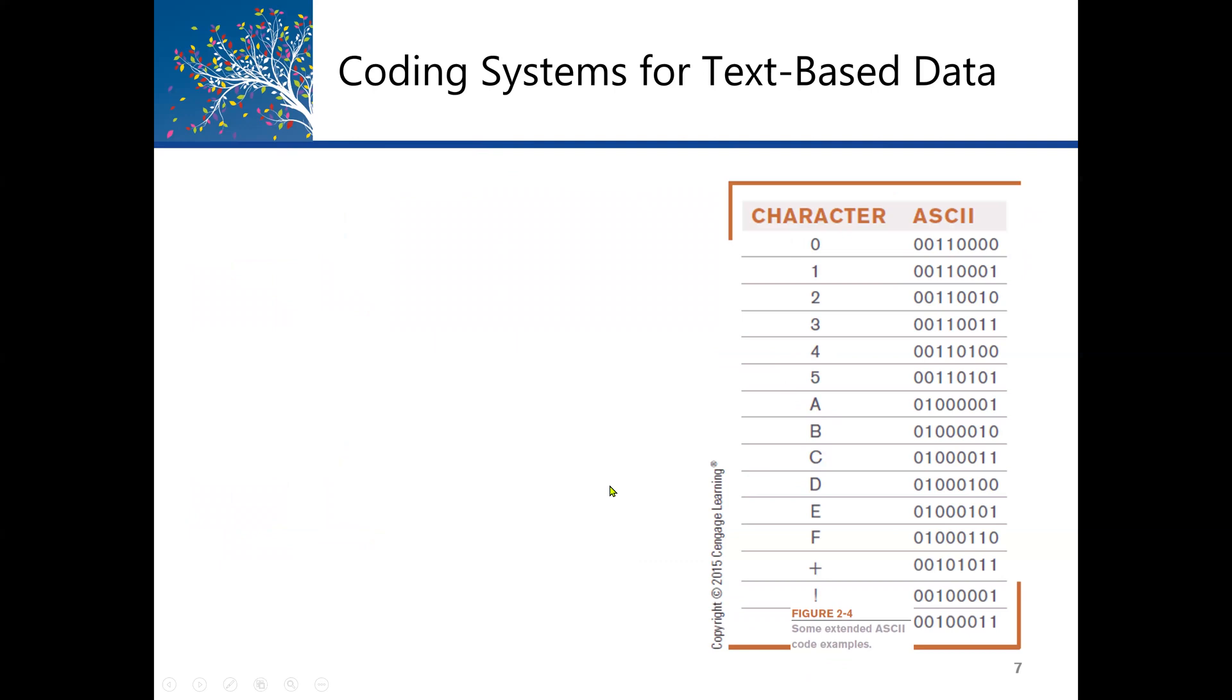In a computer system, we have what we call the coding system for text-based data. The first standard coding system is called the American Standard Code for Information Interchange, or ASCII coding system. This is how data is represented in a computer system. For example, if I have zero, zero represents the digit we have here, which is eight digits: 0, 0, 1, 1, 0, 0, 0, 0. If I have one, it represents the values. This is a standard that we use in a computer system for converting values. For example, C represents 0, 1, 0, 0, 0, 0, 1, 1.